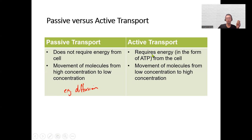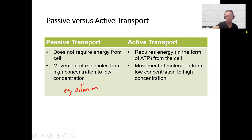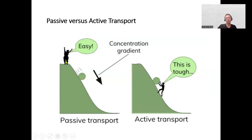Think of it like a hill: it takes almost no effort to push a boulder down the hill — that's passive transport, going from high to low concentration. Active transport is going uphill, from low to high concentration. You need to push it up, and that requires effort. That's essentially the difference between the two.